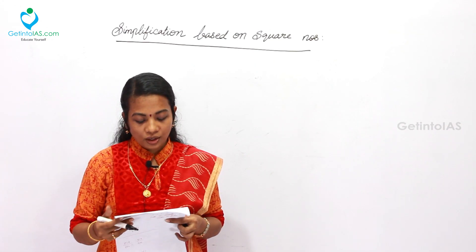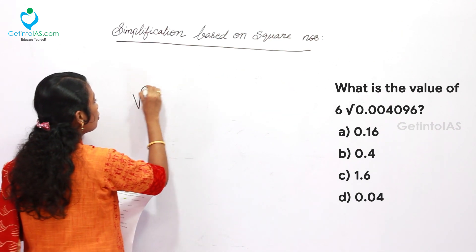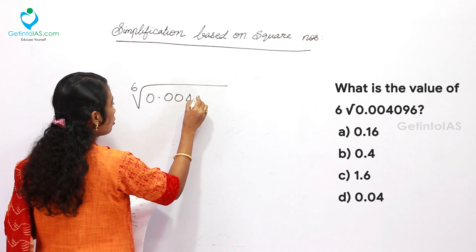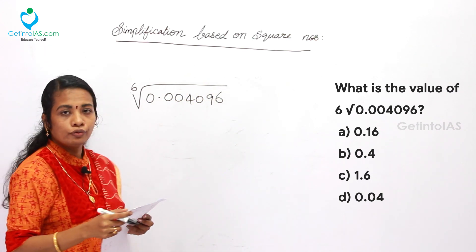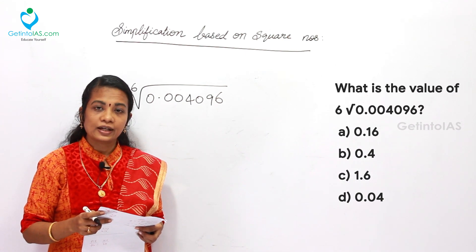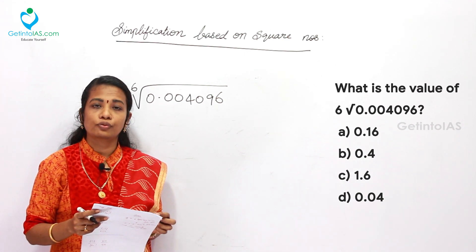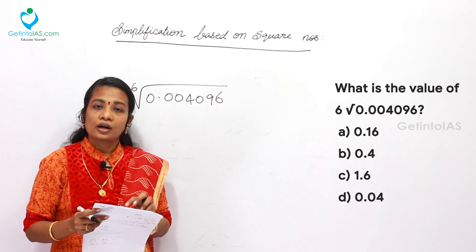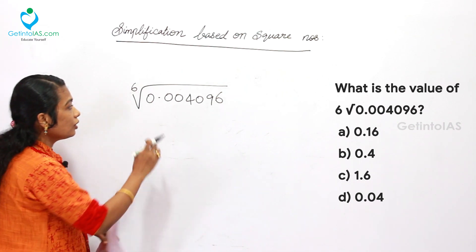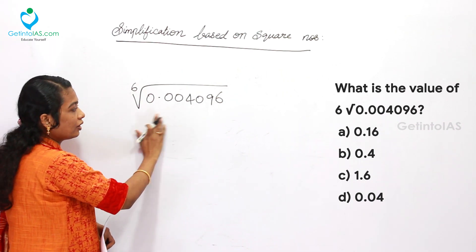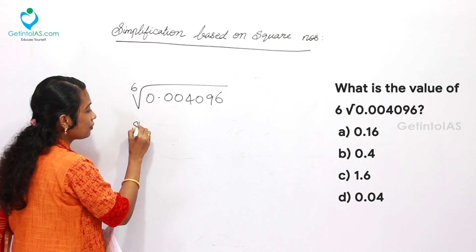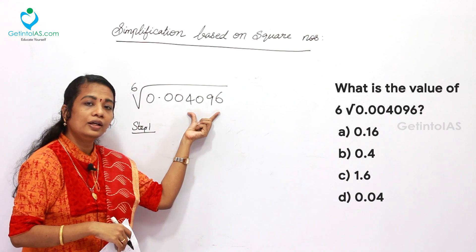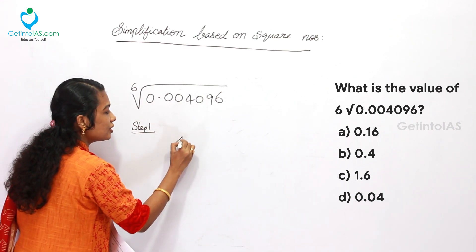The next question: what is the value of the 6th root of 0.004096? Four options are given, but options B and D both have the value 4 with different decimal points. Let us solve it in the usual way. Here 0.004096 is given. First step: consider just the integer value 4096.